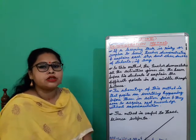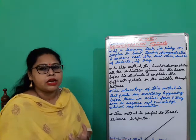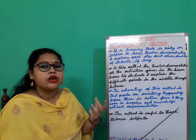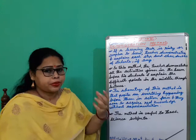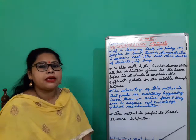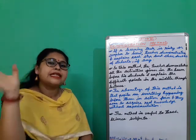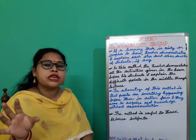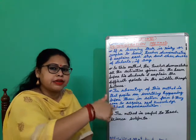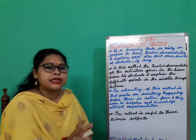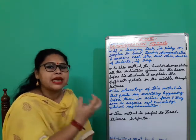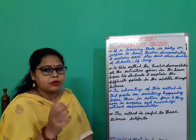For example, agar koi teacher hai jo batana chahti hai ki Earth ka rotation aur revolution kaise hota hai — so teacher kya karegi, ek globe leke aayegi, aur ek torch leke aayegi, and then ek chhota sa ball bhi leke aayegi. What will happen — jab lights saari classroom ke band kar dengi, and uske baad torch light se hi woh dikhayengi ki kis tarike se woh globe ghoomta hai dhire dhire, and the ball which is the tennis ball jo uske idgird ghoomta hai, and day night kaise hota hai.